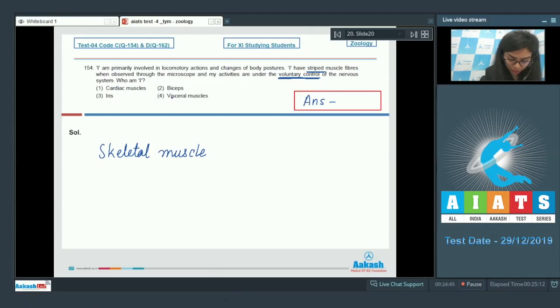Out of the given options, students, skeletal muscles are present in biceps, whereas cardiac muscles are not under voluntary control, iris is a smooth muscle, and visceral muscles are also smooth muscle types. So the right answer here would be option number two, biceps.